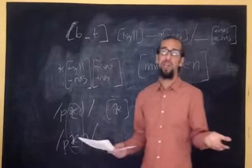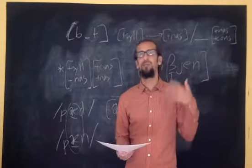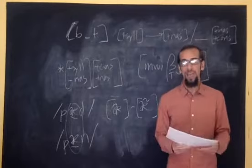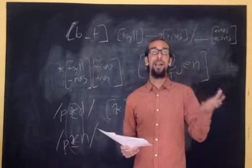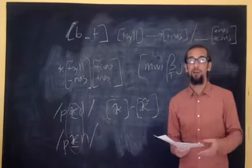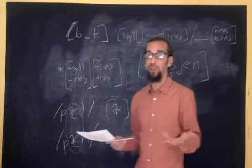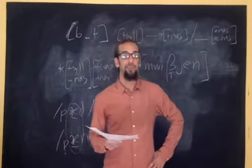There's the fully predictable and never-changing features. Those are basically constraints on the inventory of a language. We have distributions that are not contextually constant, that change by context, and those can either be partially predictable. That was the case of positional neutralization that we saw with, for instance, the tense-lax feature in English.